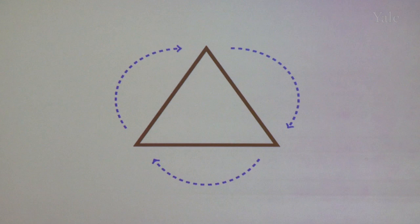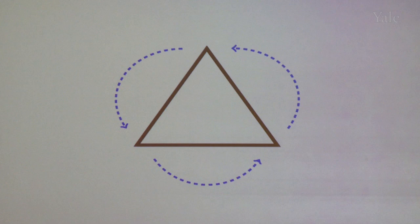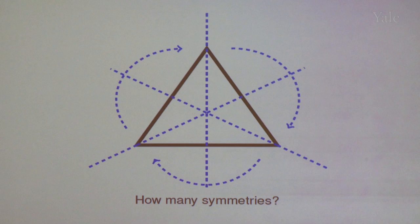What about any other types of symmetries? You can also rotate the triangle. You can rotate by 120 degrees to the right, and you'll bring the triangle back to itself. You could rotate twice — by 240 degrees — and also bring the triangle back to itself. Rotating once to the left by 120 degrees is the same as rotating to the right by 240 degrees, so those aren't different things.